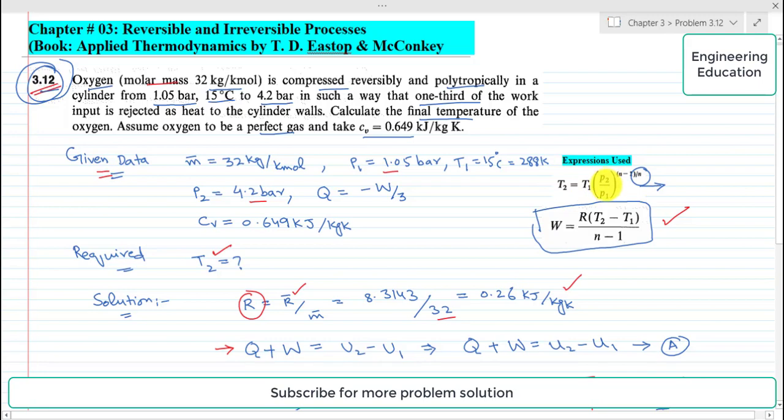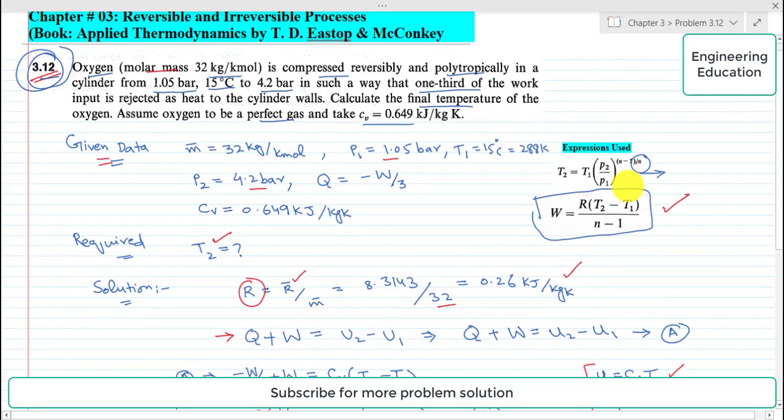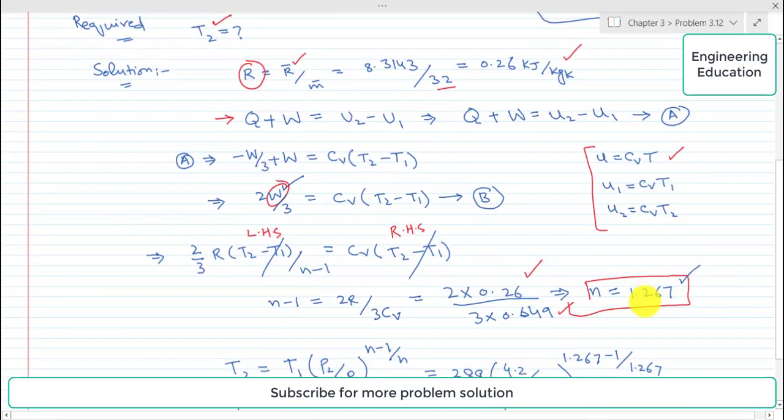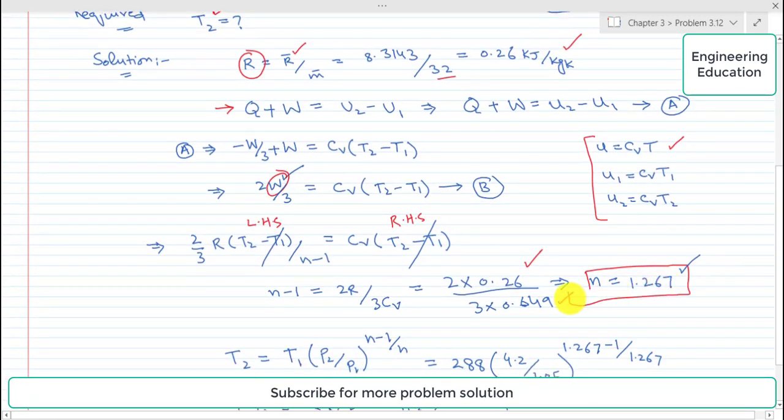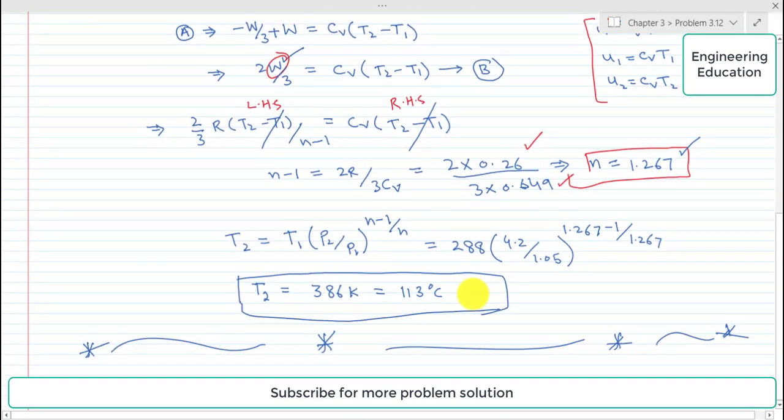So putting these values in that expression which is T2 is equal to T1 into P2 by P1 power n minus 1 by n.